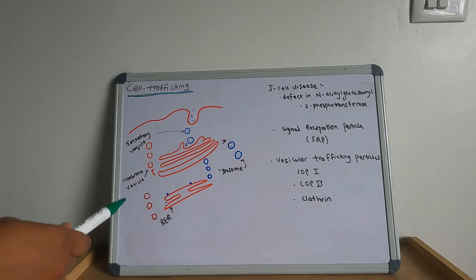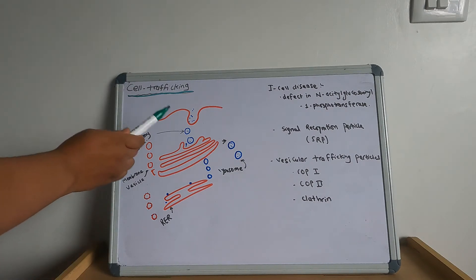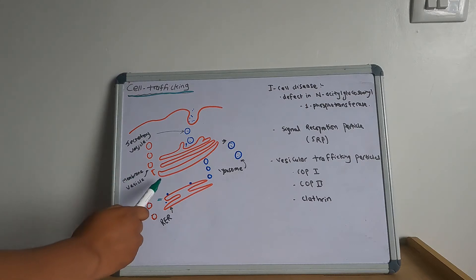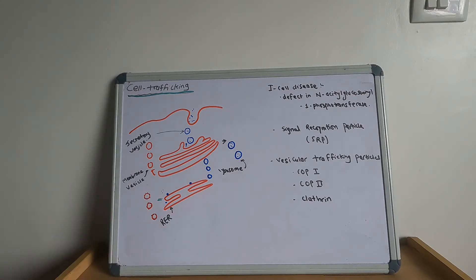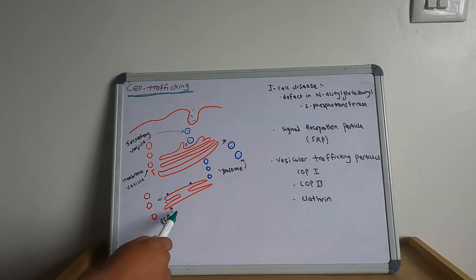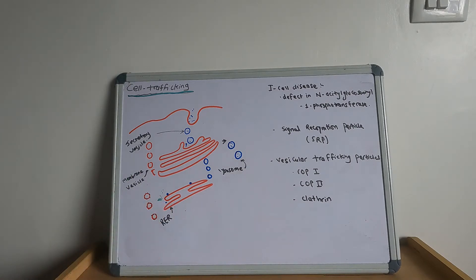First of all, I want you to know about the interrelationship of smooth endoplasmic reticulum, rough endoplasmic reticulum, and Golgi complex. These three are closely interrelated. The rough endoplasmic reticulum is made up of a network of tubes and sacs that branch and anastomose. On the surface of the rough endoplasmic reticulum, ribosomes are attached. The rough endoplasmic reticulum is at places connected with the nuclear envelope.